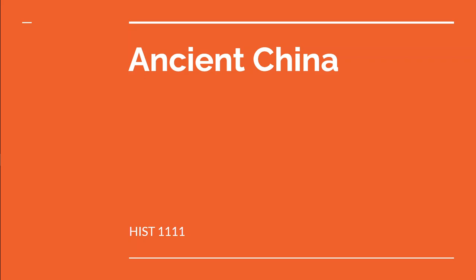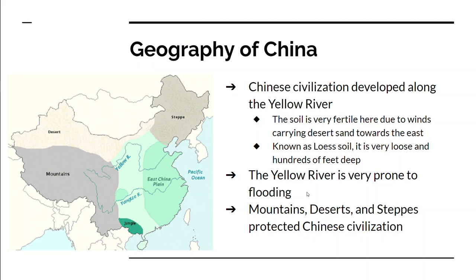Hello and welcome to your video on ancient China. Ancient China is a civilization that developed along the Yellow River. The Yellow River is special because the soil is very fertile — it's because of the desert to the west mixing with the water from the Yellow River, making this very loose but very fertile soil. Because of this loose and fertile soil, the Yellow River is very prone to flooding.